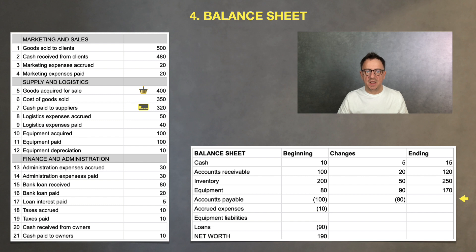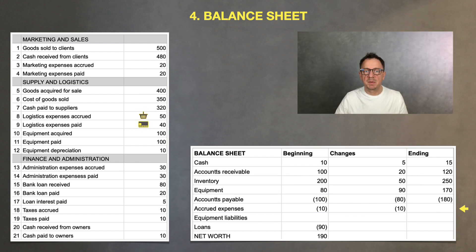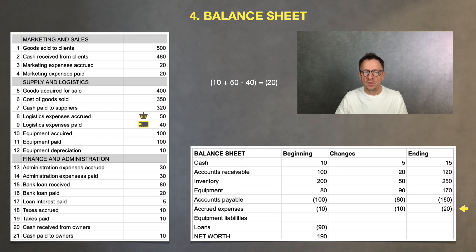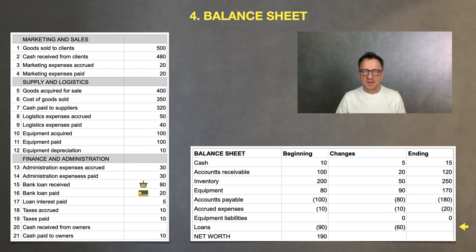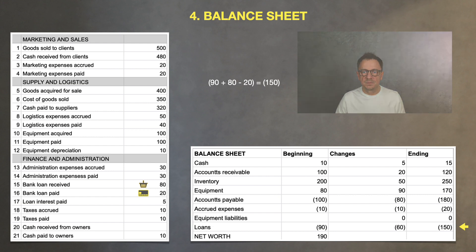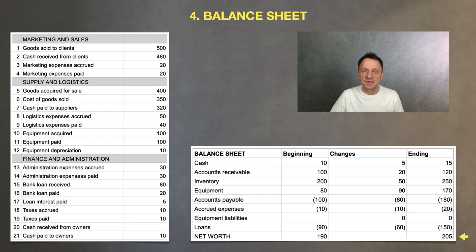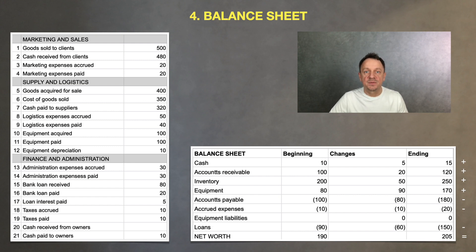The accounts payable increased by $80K. Beginning value was $100K plus $400K bought less $320K paid, giving us $180K in debt at period end. The accrued expenses are up by $10K — we had $10K plus $50K accrued minus $40K paid, now $20K in the balance sheet. The new equipment was fully paid. We increased the net loan by $60K — our loan was $90K plus $80K minus $20K paid off, giving us $150K in debt. Now we see that the company's net worth is $205K, obtained by subtracting ending liabilities from assets.